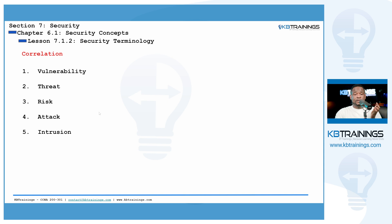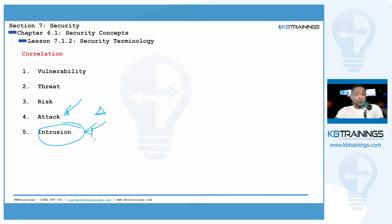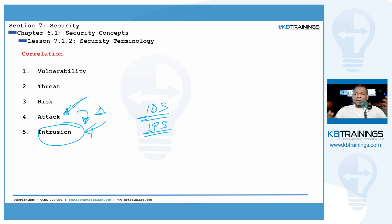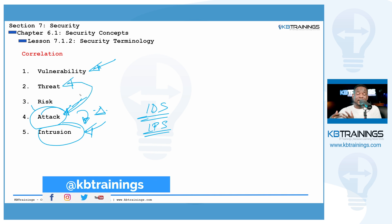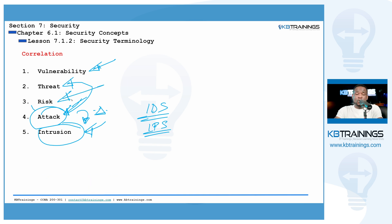To summarize the correlation between all these terms: an intrusion is when an attack has been successful and the attacker is now inside your network. The attack led to the intrusion, which IDS can detect and alert you to, or IPS can block automatically. An attack happens when an entity deliberately tries to exploit your vulnerabilities. Before an attack, it starts as a threat — being aware of all threats helps you evaluate the level of risk your organization faces. That's how all these terms connect.